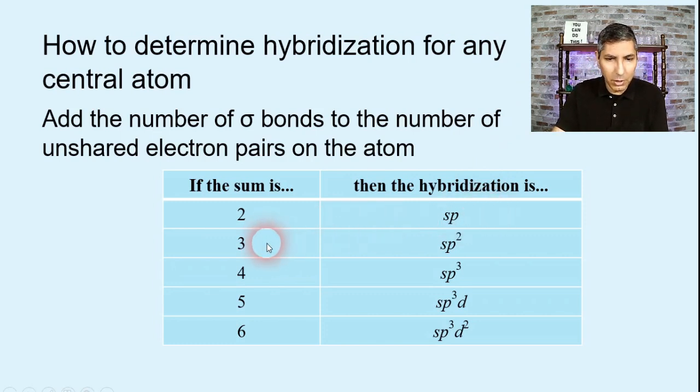If the number is three, then the hybridization is going to be SP2. If the number is four, it's going to be SP3. If the number is five, it's going to be SP3D. And if the number is six, there's going to be a hybridization of SP3D2.